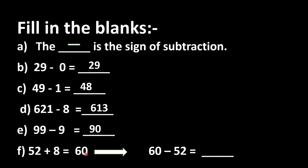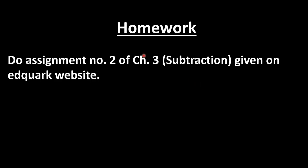In part F: 52 plus 8 is equal to 60, and 60 minus 52 is equal to dash. This is our subtraction fact — the missing number is 8, so we write 8 here. Today's homework: do assignment number 2 of Chapter 3 Subtraction on Adquark's website, and revise both assignments because on Saturday there will be a test of Chapter 3 Subtraction. Thank you.